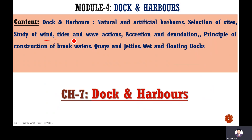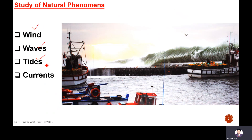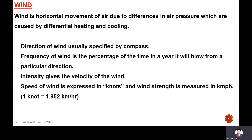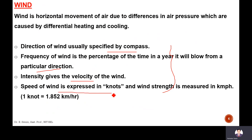Wind is a horizontal movement of air due to differences in air pressure, which are caused by differential heating and cooling. The direction of wind is usually specified by compass. The frequency of wind is the percentage of time in a year it will blow from a particular direction. Intensity gives the velocity of wind. Wind speed is expressed in knots, and wind strength is measured in kilometers per hour. One knot is equal to 1.852 kilometers per hour.